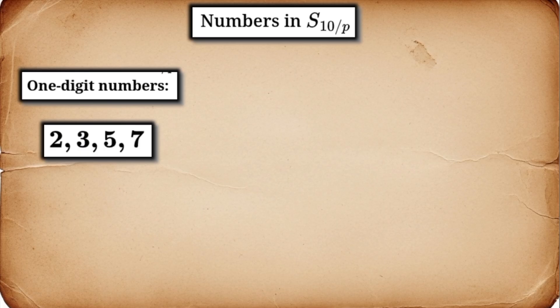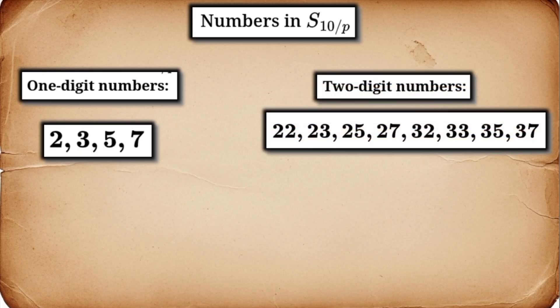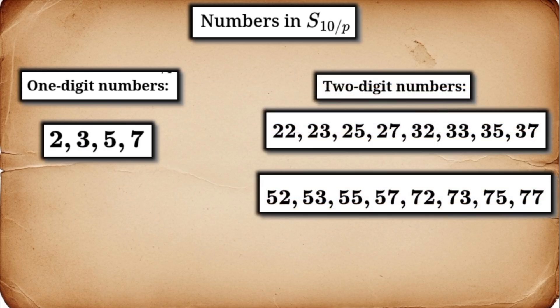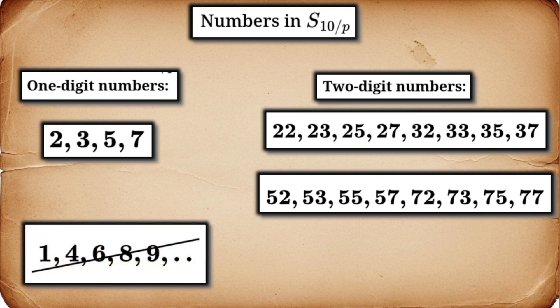Let's build the set S10 over P. Our 1-digit numbers are the primes themselves: 2, 3, 5, 7. Then we build 2-digit numbers: 22, 23, 25, 27, 32, 33, 35, 37, 52, 53, 55, 57, 72, 73, 75, 77, and so on. Again, any number containing a 1, 4, 6, 8, or 9 is banished from this universe.